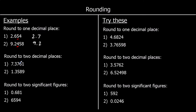Rounding to two decimal places just means we want two numbers after the decimal point, and then look at the next one. If it's 5 or above, round up. So we're going to round up to 7.38 — it's closer to 7.38 than it is to 7.37. And the next one, 1.3589: the third decimal place is 5 or above, so round up, and it becomes 1.36.